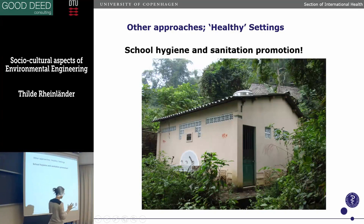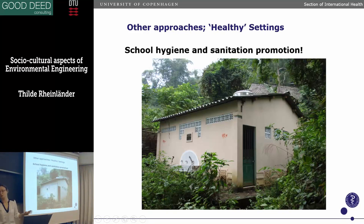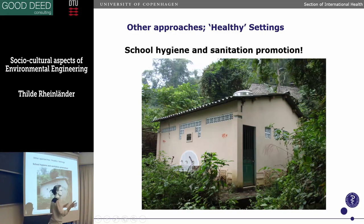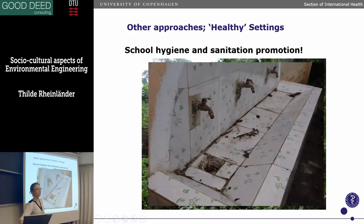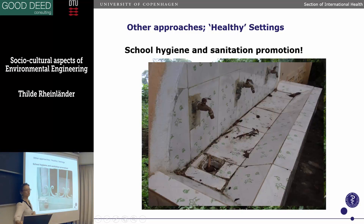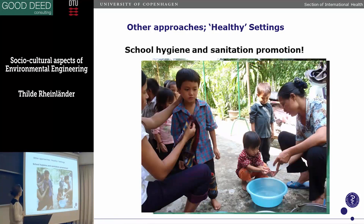The last example is this healthy settings approach — school sanitation. It's very popular, so I thought you should know about it. There are lots of campaigns around schools. It's a natural place to change hygiene habits because it's early in life. You can influence children and teach them to wash their hands. But of course, you need to make sure that the facilities are there — here's a hand washing basin with taps broken and locks on the doors.